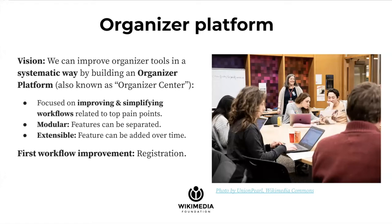There are a lot of different problem areas — I just explained 10. Rather than picking one or two, we want to approach it in a more systematic and integrated way. One way we're thinking of doing that is by creating what we're calling an organizer platform — where we can, over time, work on a lot of these problem areas. It will be focused on improving and simplifying workflows related to those pain points. We want it to be modular, so features can be separated and recombined, and extensible, so features can be developed over time by our team, different communities, or volunteers. Over time, the platform will grow and become more robust.